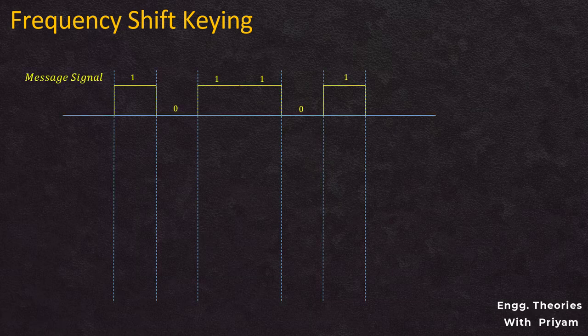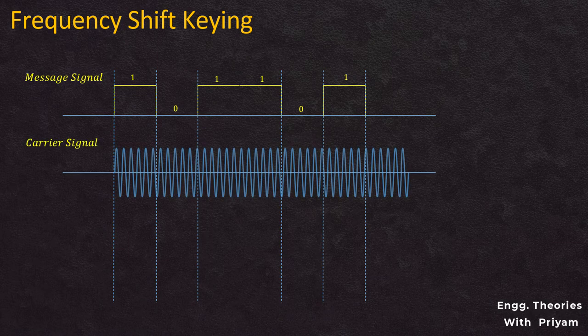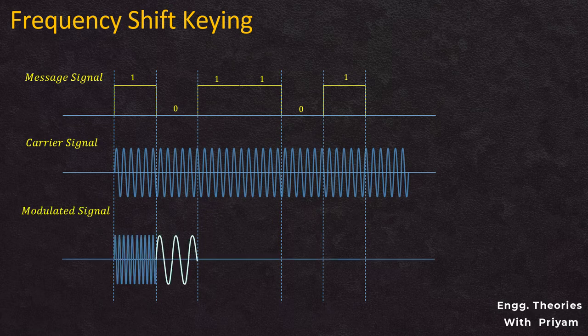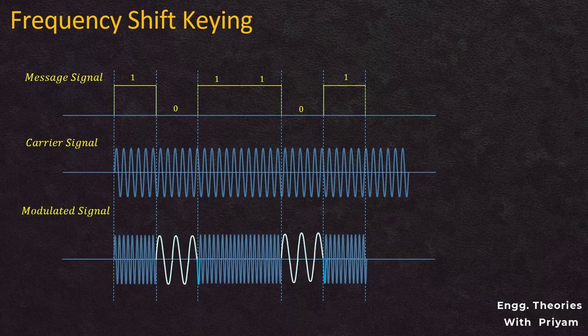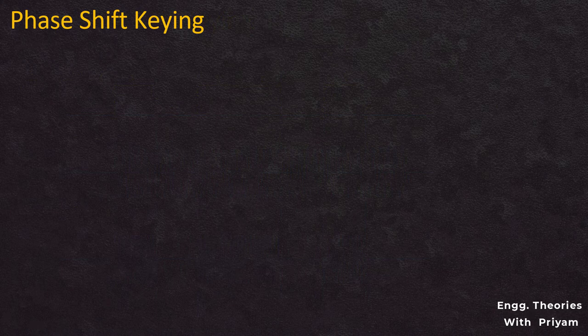In Frequency Shift Keying (FSK), the message signal is a sequence of data bits represented as a digital signal, and the frequency of the carrier signal is varied according to the message signal. When the message signal equals 1, the modulated signal has a higher frequency; when it equals 0, the modulated signal has a lower frequency.